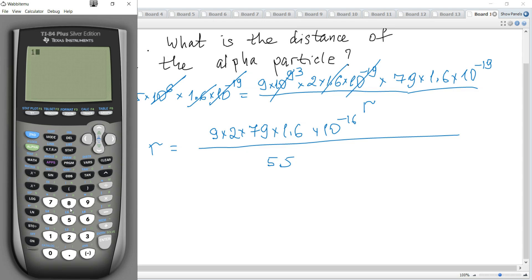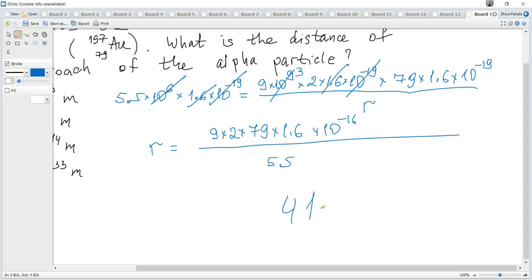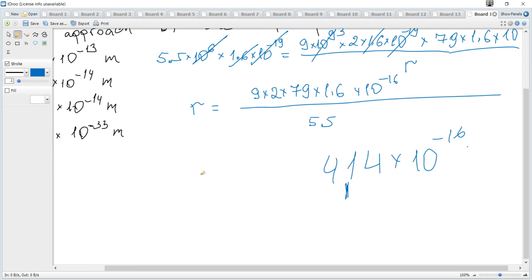So it's 18 times 79 times 1.6 divided by 5.5. It's 413 or 414 times 10 to negative 16, and it's 4 times 10 to negative 14.